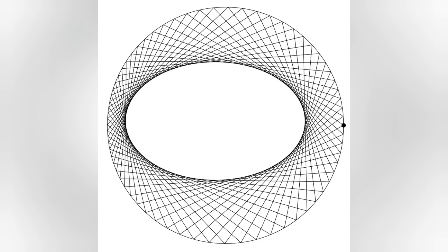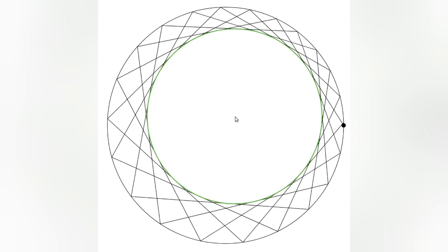As we change the dimension and placement of the inner and outer conics, the lines change accordingly. Depending on the configuration, we may or may not end up with a closed polygon.